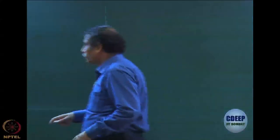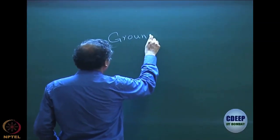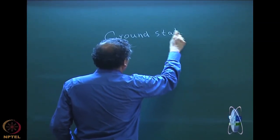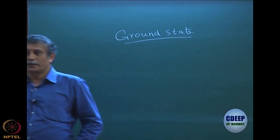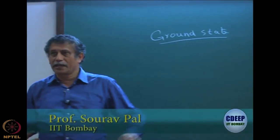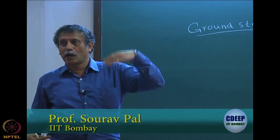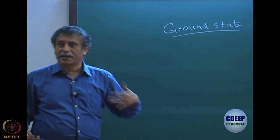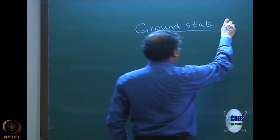Let me remind you what we are doing. We are doing ground state perturbation theory. This essentially means that this is the ground state of the physical Hamiltonian. We are looking at the exact ground state and trying to find out how the exact ground state energy can be approximated by perturbation theory. That is what is called ground state perturbation theory.